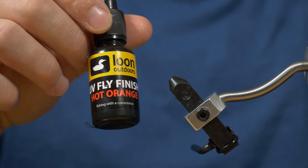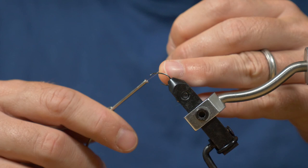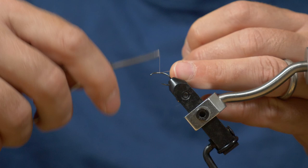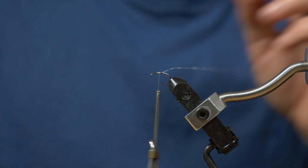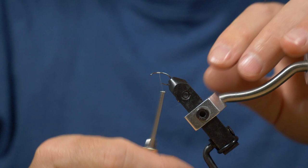Hook in the vise. We're going to start laying a base of thread. Come about a couple millimeters back from the eye. You're not going to go very wide but you're going to build it up a bit because what this does is help the UV resin stay in place and make sure it doesn't slide either way.